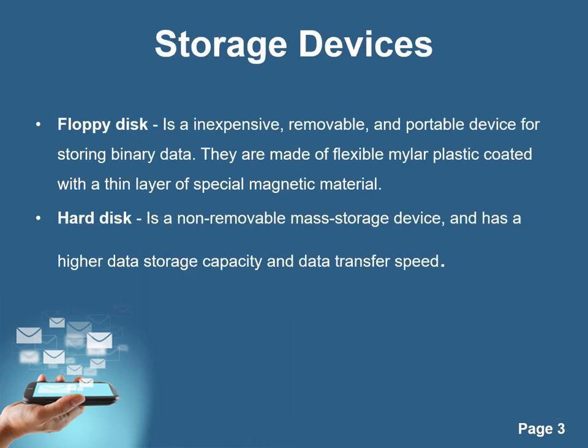Storage devices: a floppy disk is an inexpensive removable portable device for storing binary data. They are made of flexible plastic coated with a thin layer of special magnetic material. Hard disk is a non-removable mass storage device and offers higher data storage capacity and data transfer speed.